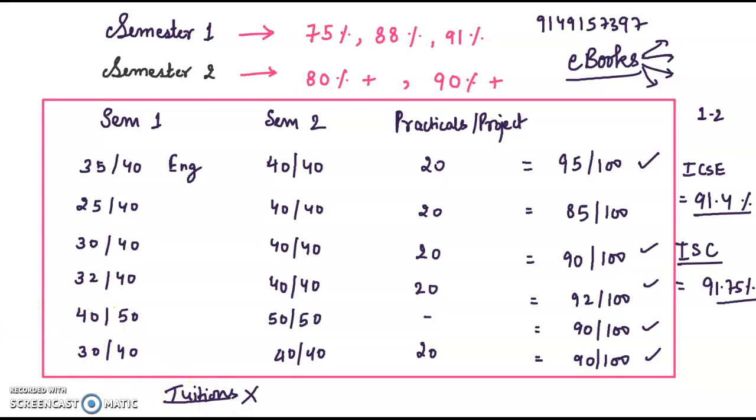At the end of my preparation, I left my tuitions. I focused on self-study. I tried to give myself time, and that is how I could score 97 in 12.